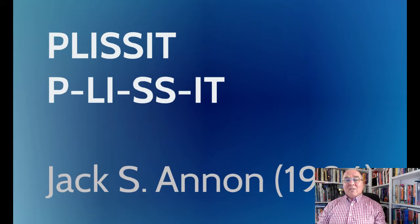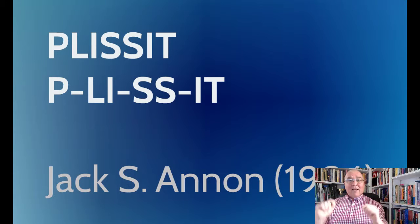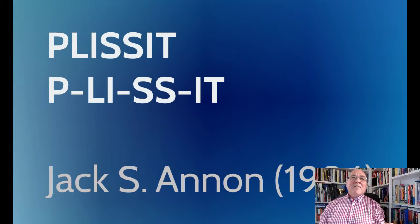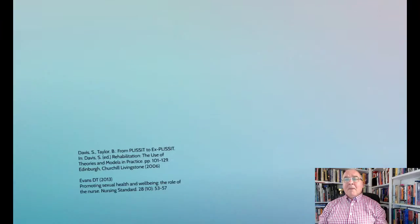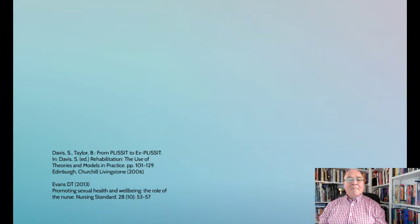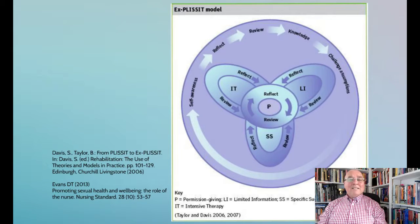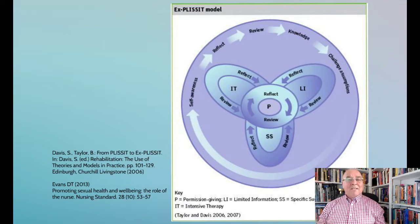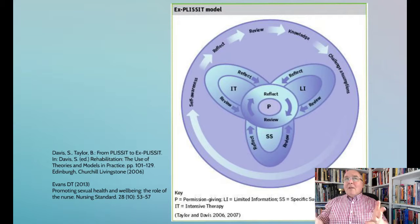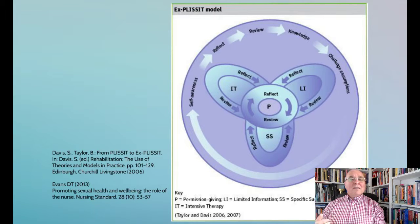Sadly, too many people read it in one line — they thought they had to give permission at the beginning, then limited information, all the way to the end. So it was seen as a very linear, tick-box exercise. But then around 2006, Taylor and Davis put it into a totally different framework and called it the extended PLISSIT model. What they've done is put permission giving at the heart of it all, so whichever stage you're at, you need permission giving — whether it's permission just to talk about sex in the first place, or even permission about whether you should refer the client on to somebody with more knowledge and expertise than you.